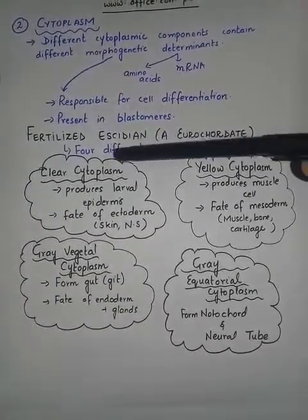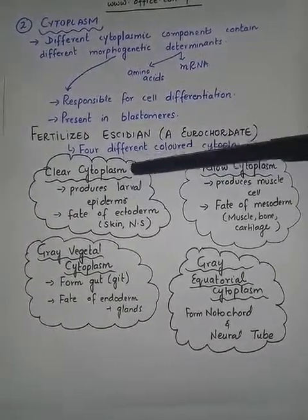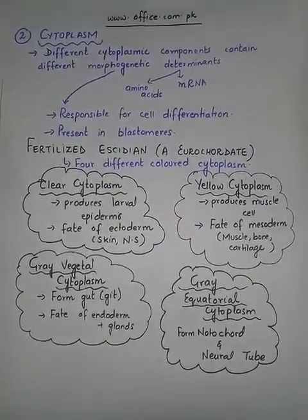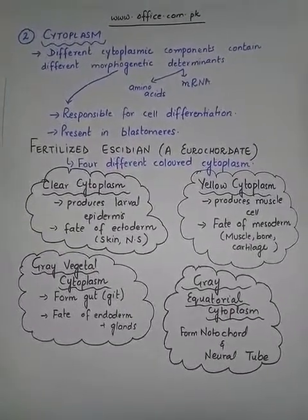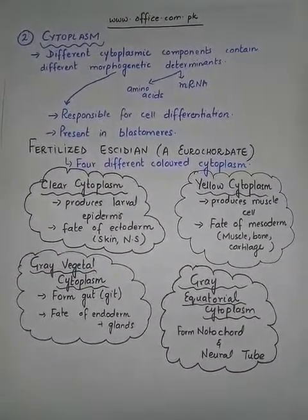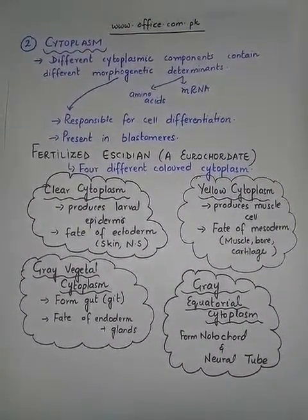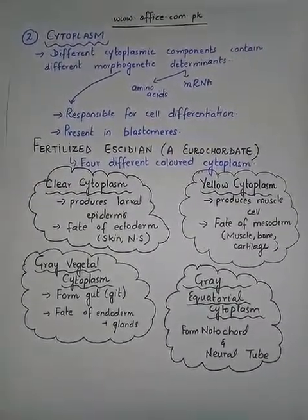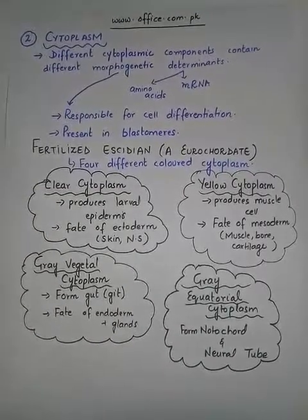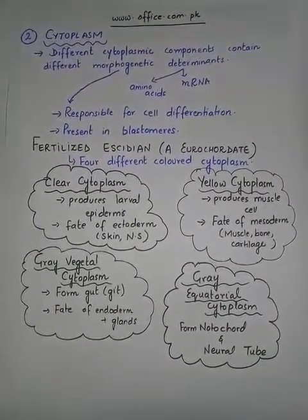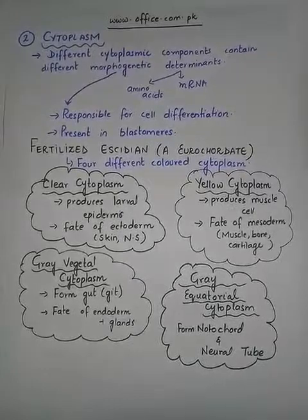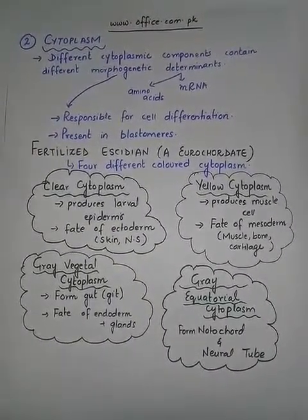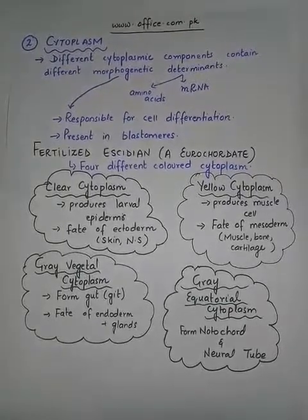The clear cytoplasm is responsible for the production of larval epidermis. Epidermis, as the name indicates, will form the ectoderm — ectoderm develops into the epidermis, which is essentially the skin. It also controls the production of the nervous system, as part of the ectoderm becomes the neural plate and then folds into the neural tube.